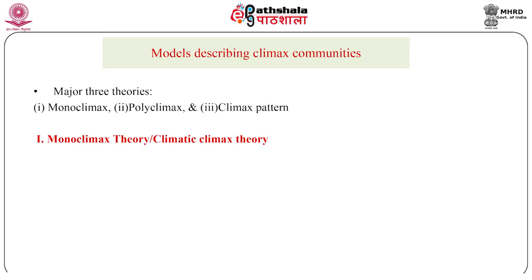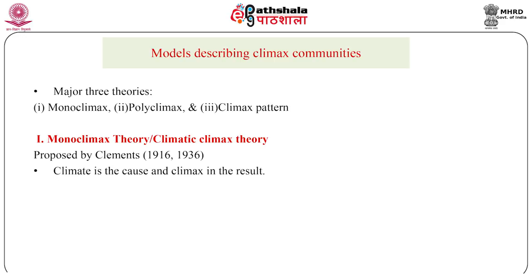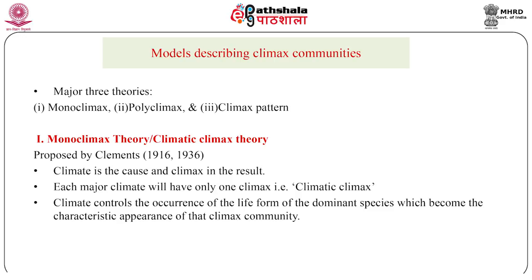The monoclimax theory, which is also known as the climatic climax theory, was proposed by Clements in 1916. As per this theory, climate is the cause and climax is the result. Since for each major climate there will be only one climax, this climax is known as climatic climax. It is the climate that controls the occurrence of the life form of the dominant species, which in turn becomes the characteristic appearance of the climax community — that is why this theory is also known as the climatic climax theory.